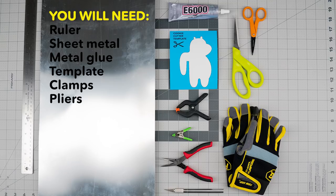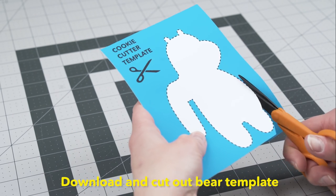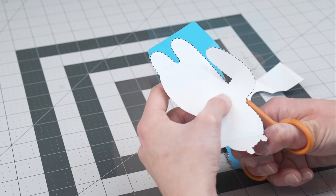There are some steps that may be dangerous, so please get an adult to help you. First, click on the link in the top corner to download the template. Then, cut it out with scissors.